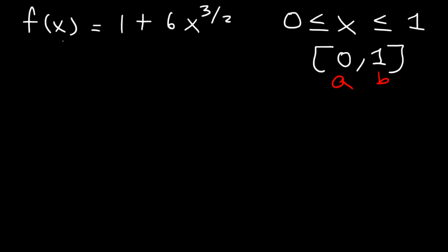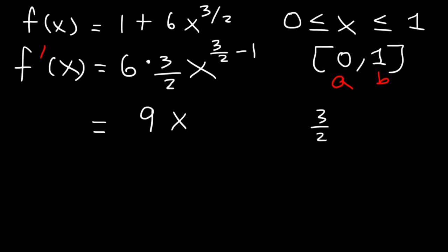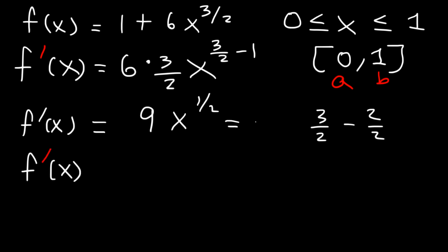The first thing I will do is find the first derivative, f prime of x. The derivative of 1, which is a constant, is 0. To differentiate the next term, let's use the power rule. Rewrite the constant 6 in front, take the exponent and move it to the front — multiply 6 by 3 over 2 — then subtract the exponent by 1. 6 times 3 is 18, divided by 2 is 9. 3 over 2 minus 1 is 1 half. So f prime of x equals 9x to the half, which is the same as 9 square root of x.